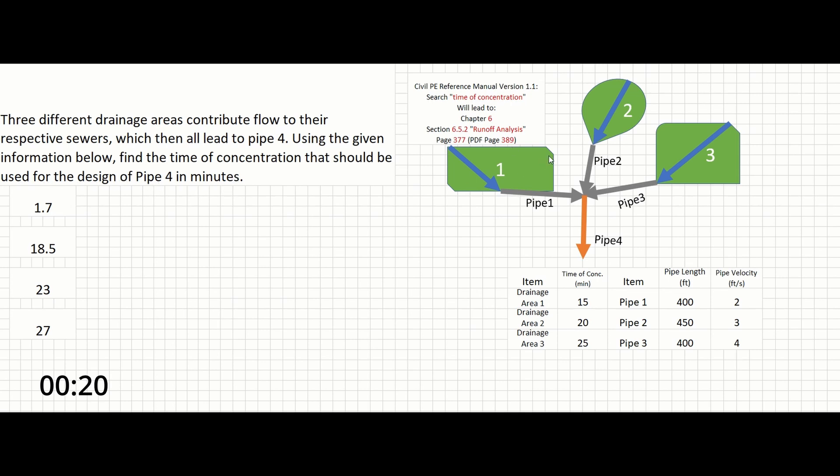Over here we can see drainage area 1 leading to pipe 1, area 2 leading to pipe 2, and area 3 leading to pipe 3. All of these pipes then lead into pipe 4. Down here we can see the time of concentration for each drainage area, as well as the pipe length and pipe velocity for the corresponding pipes leading away from each drainage area.